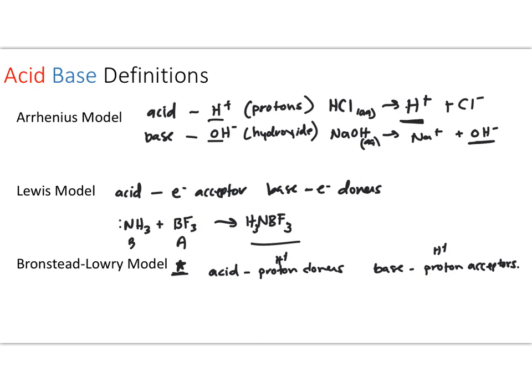Because the Bronsted-Lowry definition is what we're going to focus on for the remainder of this unit, I want to go ahead and share with you what the transfers actually look like. If we were to take an example, such as hydrochloric acid and water, we're going to have an acid and a base present. In this case, we have an acid. In this case, we have a base. What's going to happen is the acid is going to behave as a proton donor. So HCl is going to transfer an H-plus ion or proton to the water molecule. And that's going to produce for us H3O-plus and Cl-minus.